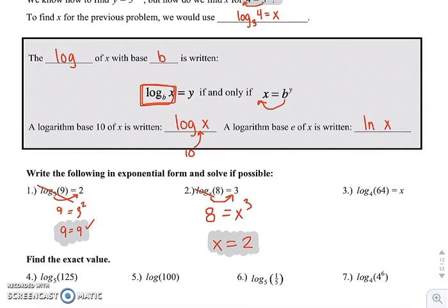Same thing for 3. We're going to swing the base 4 over. It will now become the base for an exponent of whatever's on the right-hand side there. And we're left with 64. 64 is 4 to what power? 4 to the third. So x is 3.